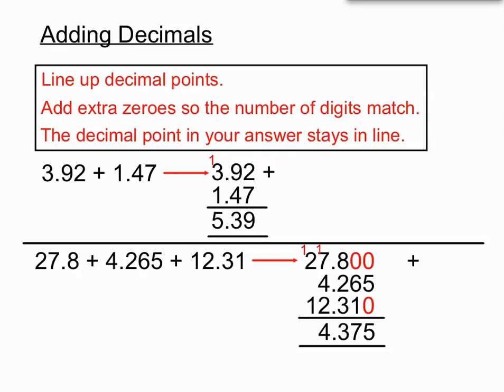1 plus 2 plus 1 is 4. So, okay, we lined up the decimal points. We added extra zeros to help everything line up here in this second example. And our decimal point in our answer ended up just being straight in line with the decimal points that were in our question.